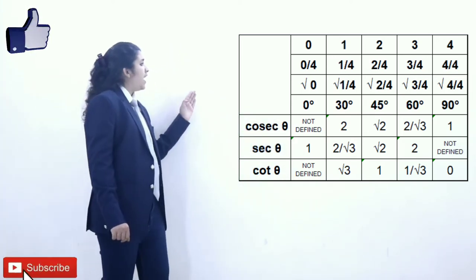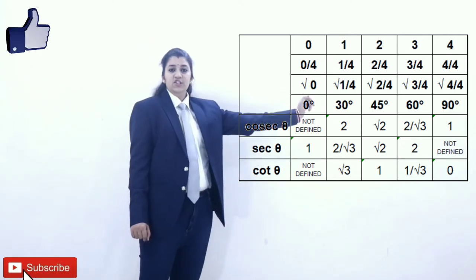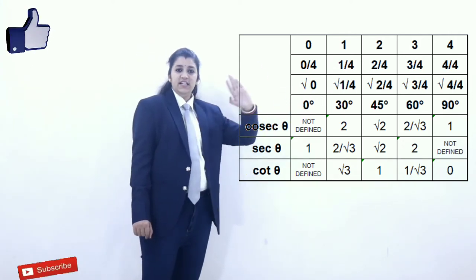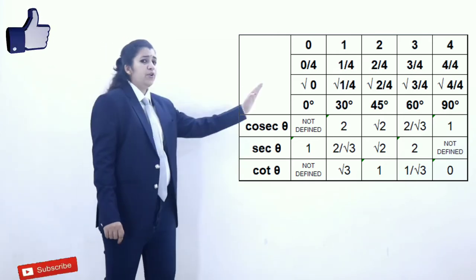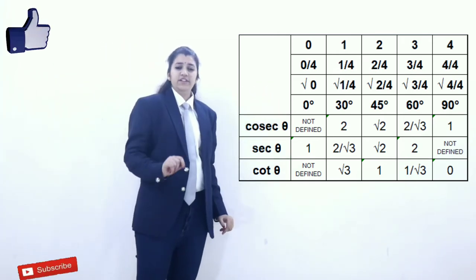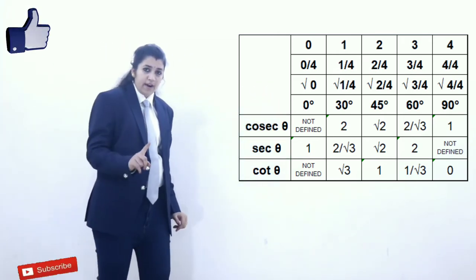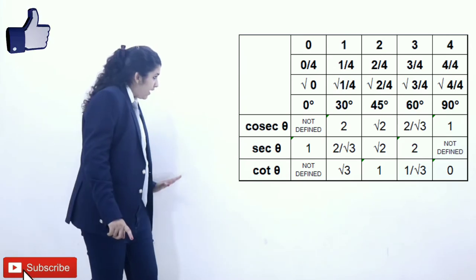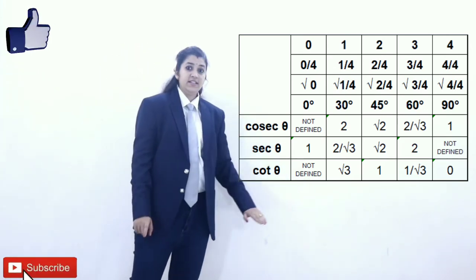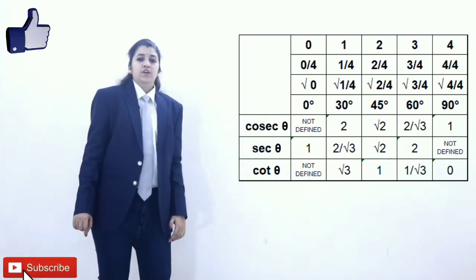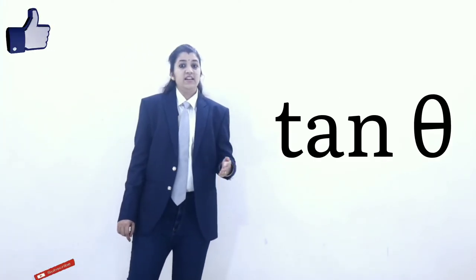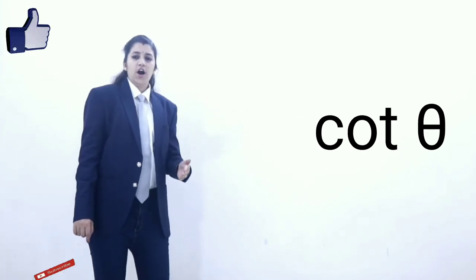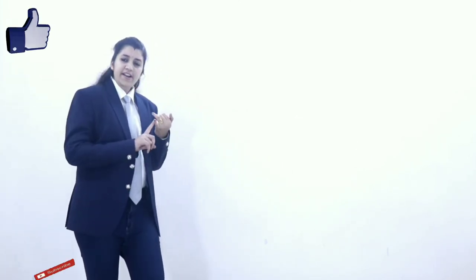And last, we have cos 90 degrees, which is 0. If we reciprocate 0, we get 1 upon 0, which is not defined. That is why sec 90 degrees is not defined. So till now, we have completed sin, cos, tan, sec, cosec, and cot for different angles.